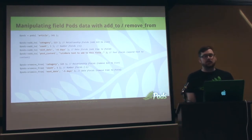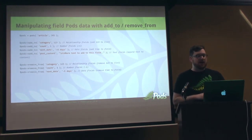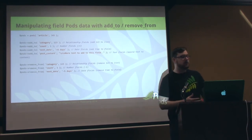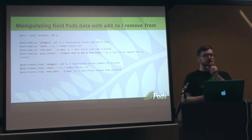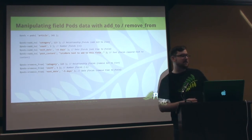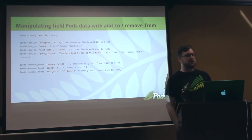Two other really cool manipulation things for data are Add To and Remove From. You can already do save and add within the Pods API, but Add To is really special because you can add a category to a list of already existing category items. So if you look up your article and want to add one category without changing all the other categories, just run this one-line function — done. Inside this function, the code is like 20-30 lines, so save yourself a lot of trouble.